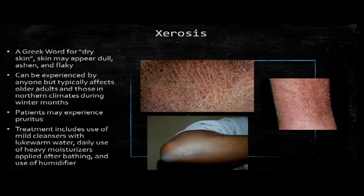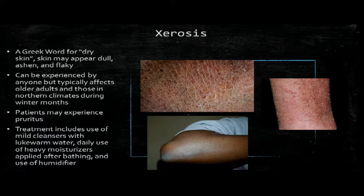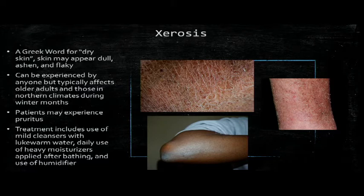Xerosis is just common dry skin. It can sometimes be itchy and more commonly affects older adults due to decreased activity of the sweat and sebaceous glands with age. It's exacerbated by winter climates with no humidity. In my opinion, Vaseline is one of the best things to use because of its occlusive, moisturizing nature — apply it after a bath and really slather it on. You can use other creams like Lubriderm as well. Of note, diabetes is also a risk factor for xerosis.